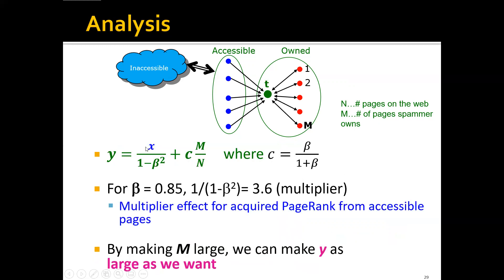Looking at the second term: although n might be extremely large, the number of pages the spammer owns, m, can also be very large. By making m very large, the spammers can actually make y as large as they want.